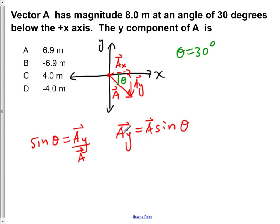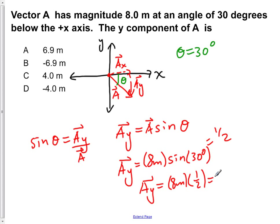Now if we plug in the values for these, we would find that Ay is equal to... A is 8 meters, and it's the sine of 30 degrees. We know that the sine of 30 degrees is equal to 1 half. So now if we carry out the multiplication, we have Ay is equal to 8 meters times 1 half, which would give us 4 meters.